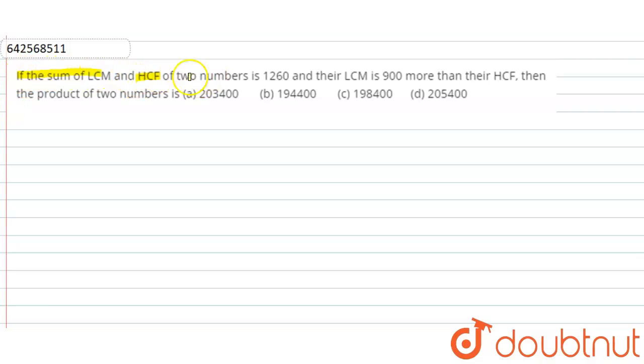If the sum of LCM and HCF of two numbers is 1260, and their LCM is 900 more than the HCF, then what is the product of the two numbers? Option A: 203400, Option B: 194400, Option C: 198400, or Option D: 205400.